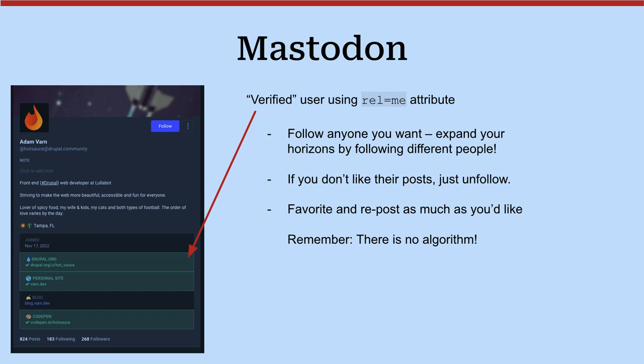One thing I recommend for people who are just trying this out is start out following people you might know who's on there. You can follow me — I post a fair amount. You can look at who I follow and follow them. Everybody in the Mastodon community is much more focused on being a person, not trying to sell a product. You'll see a lot more human interactions. You'll find lots of neat people out there. Like, I follow a Drupal developer in Nigeria — I never would have found that on Twitter.